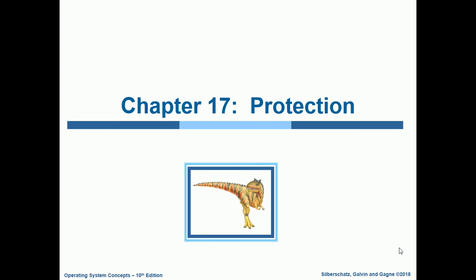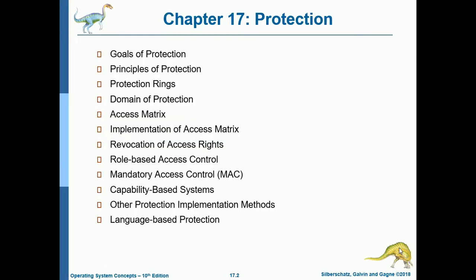Chapter 17 is all about protection. The contents of this chapter are: goals of protection, principles of protection, protection rings, domain of protection, access matrix, implementation of access matrix, revocation of access rights, role-based access control, mandatory access control or MAC, capability-based systems, other protection implementation methods, and language-based protection.